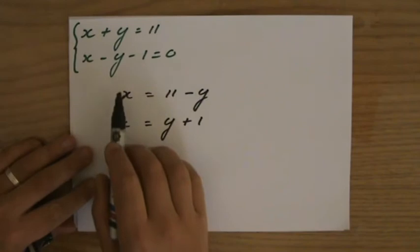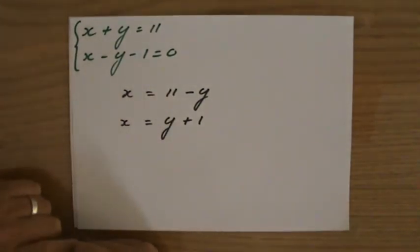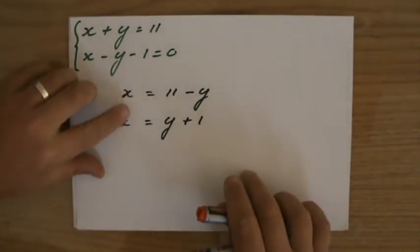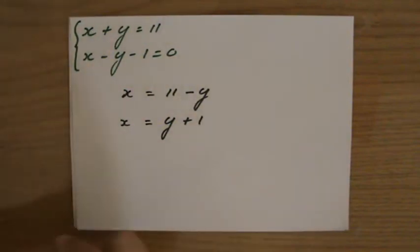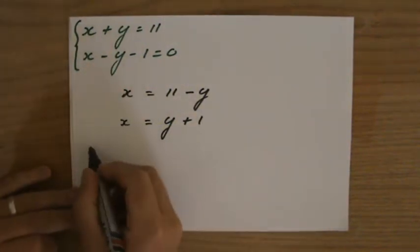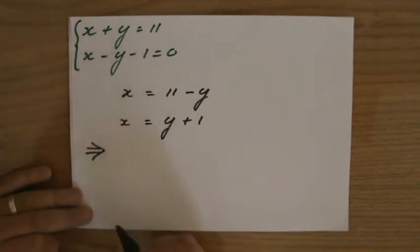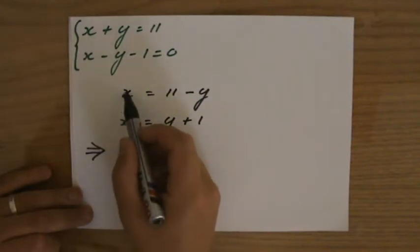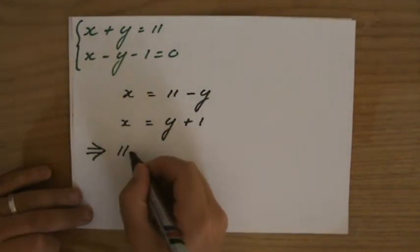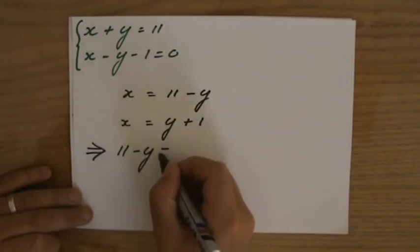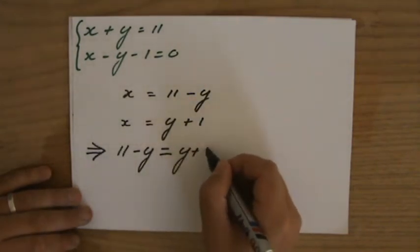All right, so I've made x the subject in both equations. Well, these x's are the same. So therefore, the conclusion you can make is that considering they are the same, then 11 - y has to be the same as y + 1.